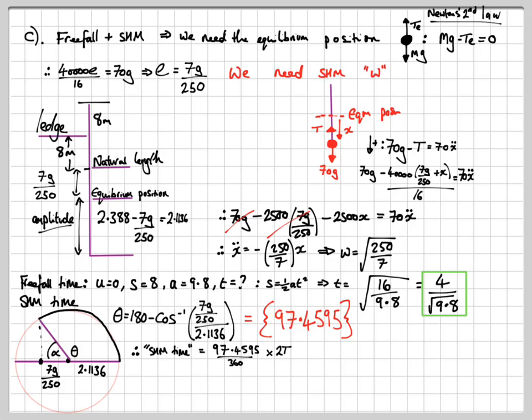So, therefore, the SHM time will be that over 360 times by the periodic time, which is 2 pi over w. And that gave me this time here, as you can see. And I'm now in a position to find the total time, which is simply the addition of the two parts we found. And at the end of all that, it gives us 1.56 seconds when rounded to three significant figures.